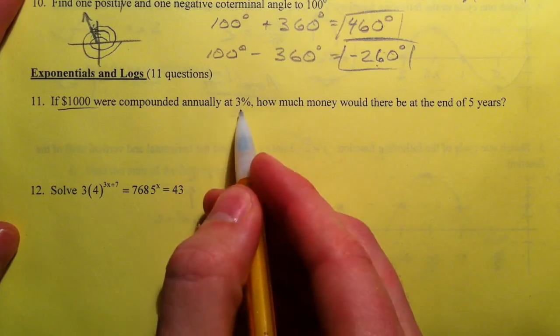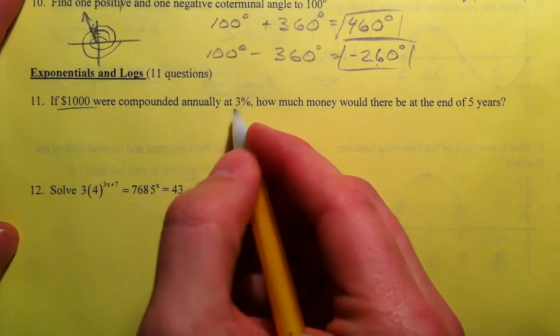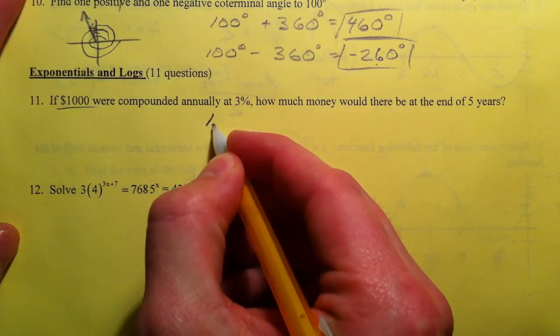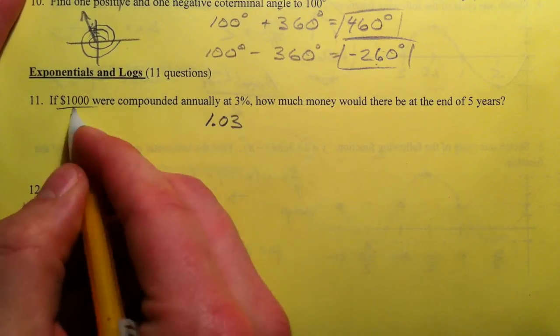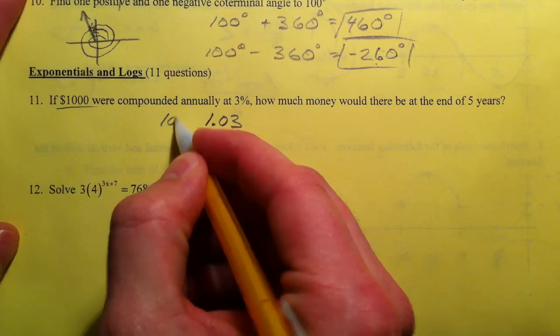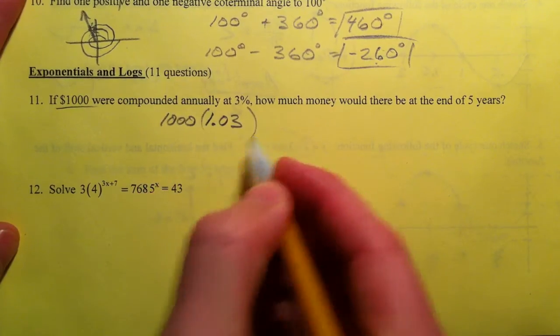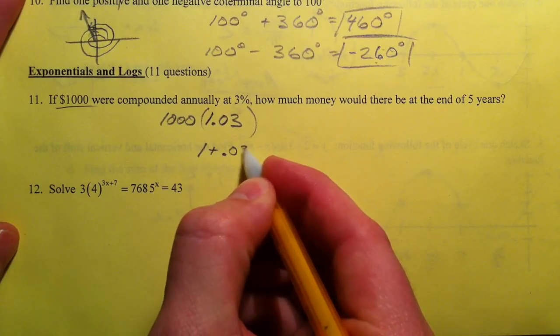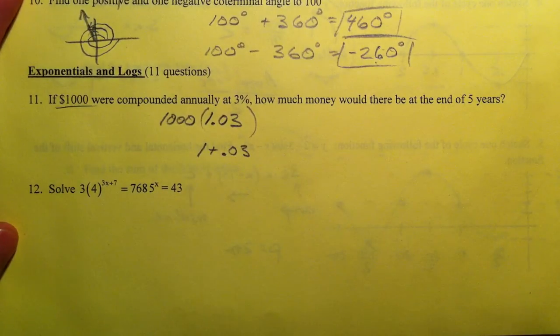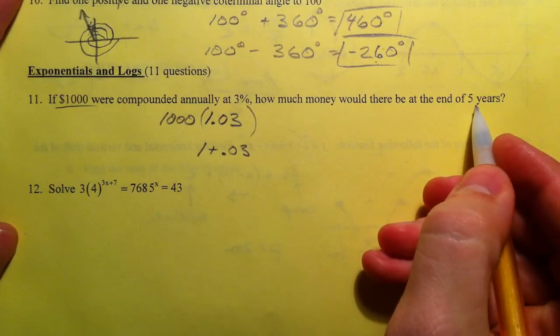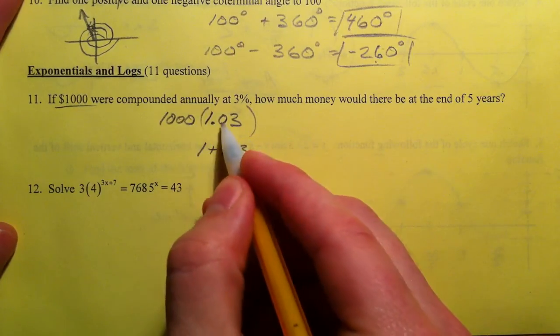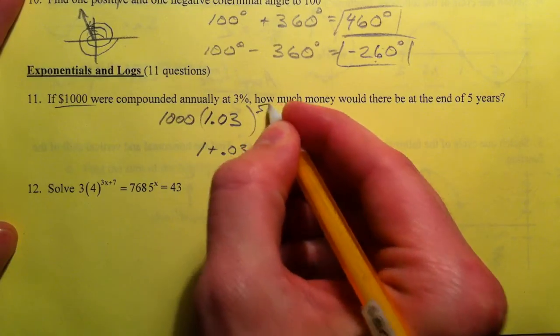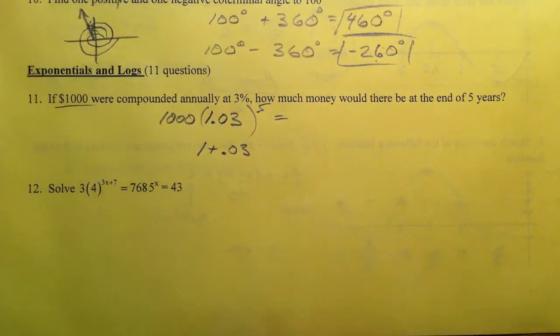Suppose we've got $1,000 compounded annually at 3%. It's actually growing at 103%, so we're going to multiply $1,000 by 1.03. That's coming from you get your 100% plus your interest rate when it's growing. How much money would there be at the end of 5 years? You could do times 1.03 times 1.03 and keep multiplying, or that becomes an exponent—repeated multiplication.